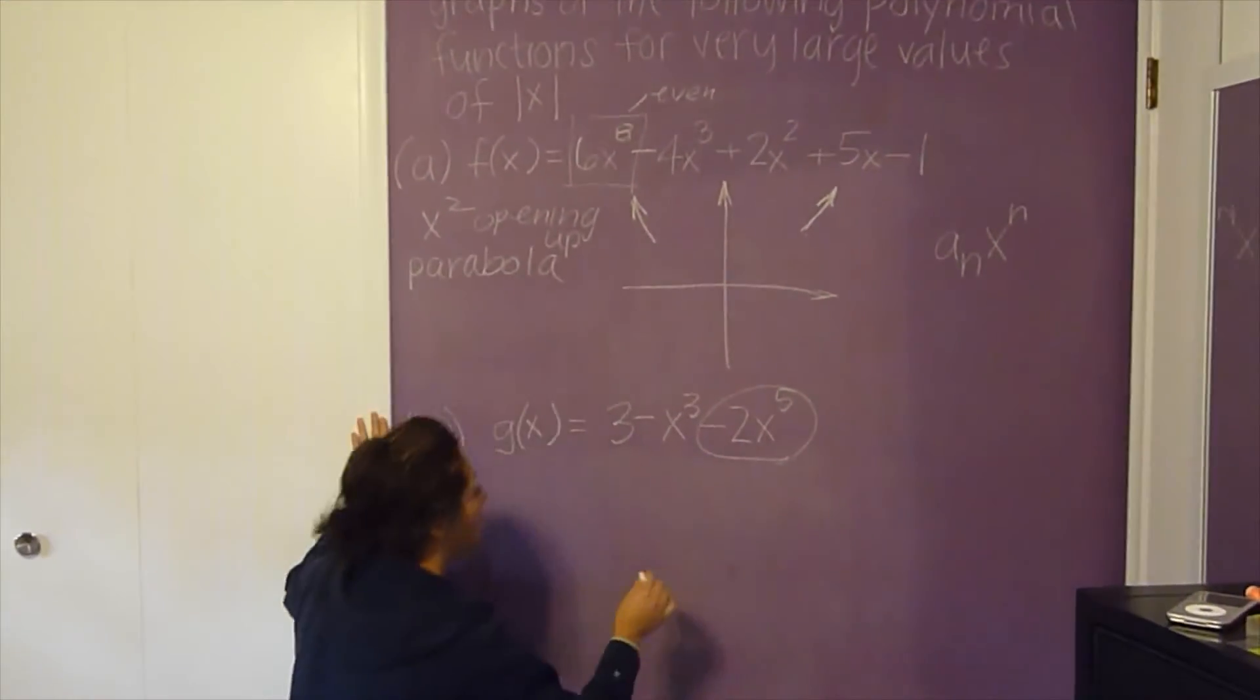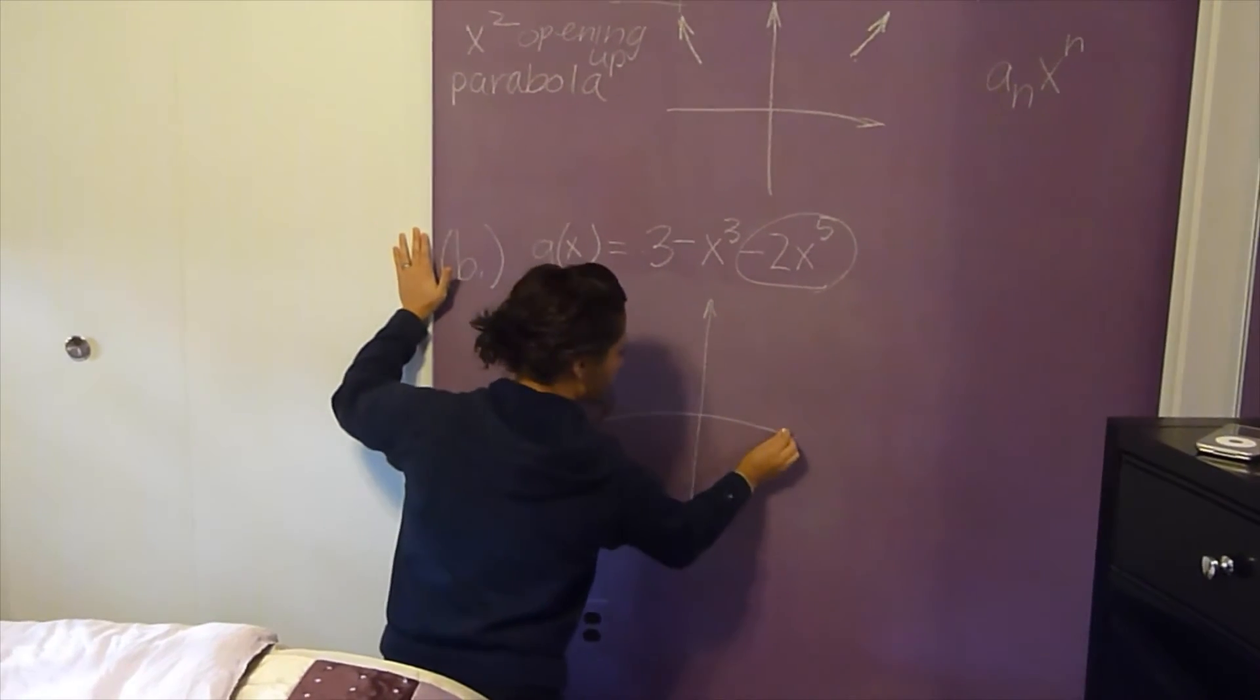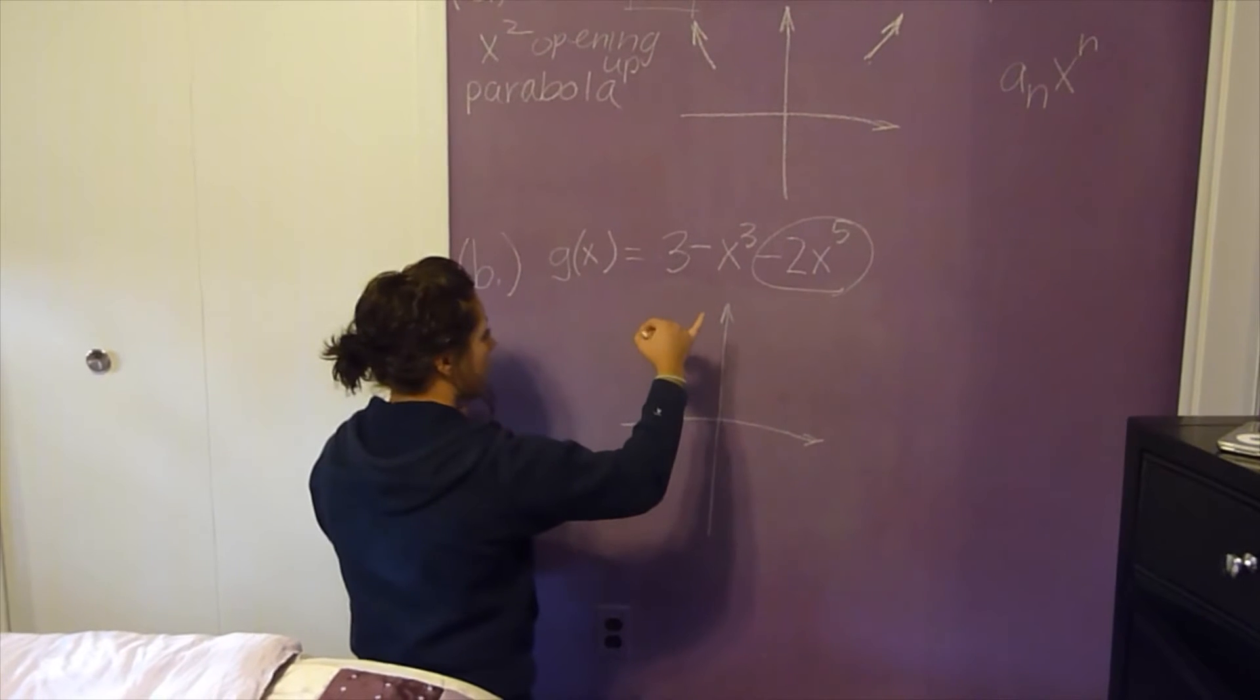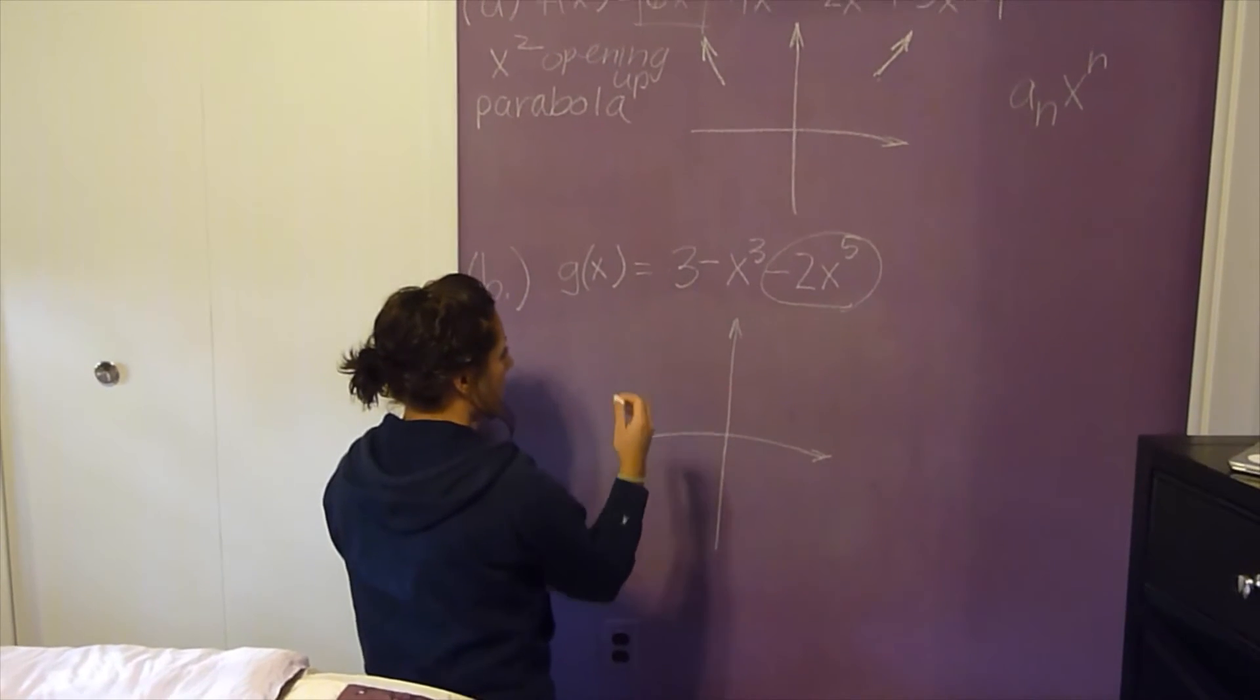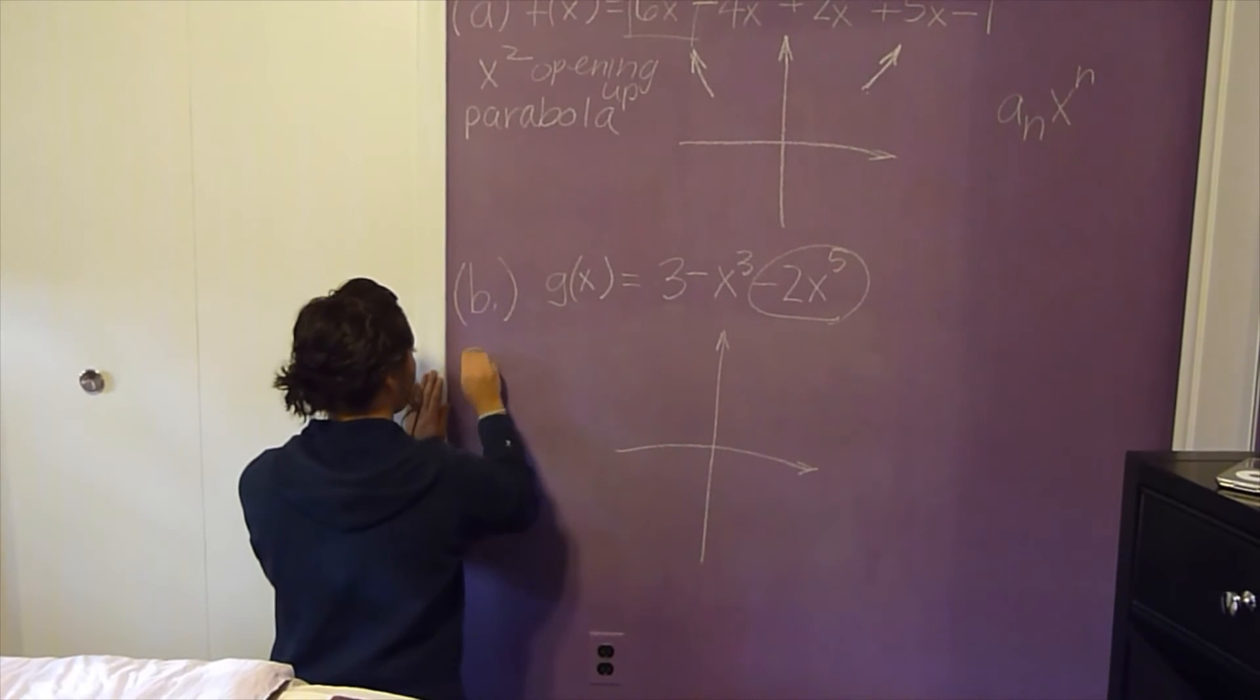So technically you're just looking at that part. When you graph it, you have -2 as the coefficient. Since it's odd, it's going to look like the cubing function.